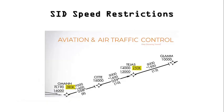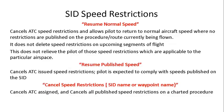SID speed restrictions are depicted in charts. Phraseologies for SID speed restrictions are: resume normal speed, resume published speed, and cancel speed restrictions. 'Resume normal speed' means whatever ATC speed restrictions were imposed will be cancelled, allowing the pilot to return to normal aircraft speed, but the pilot must still follow all speed restrictions of the upcoming flight segment. 'Resume published speed' cancels the previously imposed ATC speed restriction, but the pilot must follow all charted speed restrictions of the SID. 'Cancel speed restrictions of SID or a waypoint' cancels all published speed restrictions of the SID or at a particular waypoint.